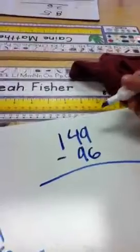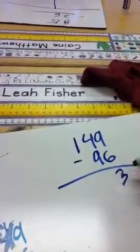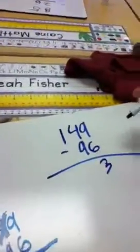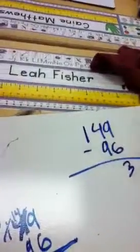So what you do is 9 minus 6 is 3. 4 minus 9, you can't do that because you have to regroup it because you can't subtract.